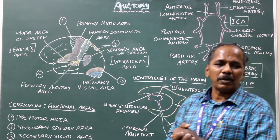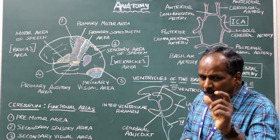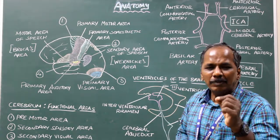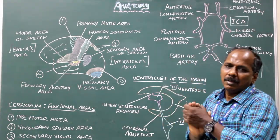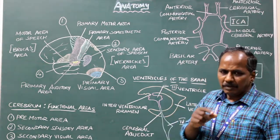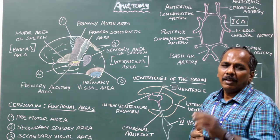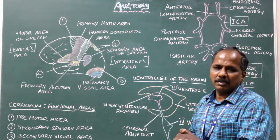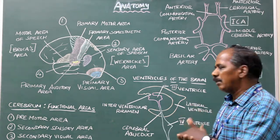The ventricles are filled with cerebrospinal fluid. The cerebrospinal fluid is produced by choroid plexuses lining the interior of the ventricles. The cerebrospinal fluid drains through the arachnoid granulations.